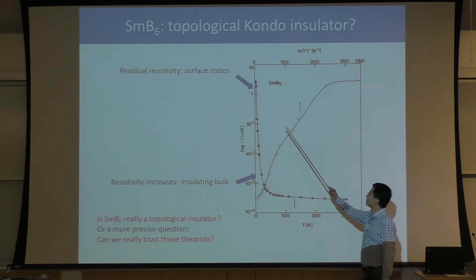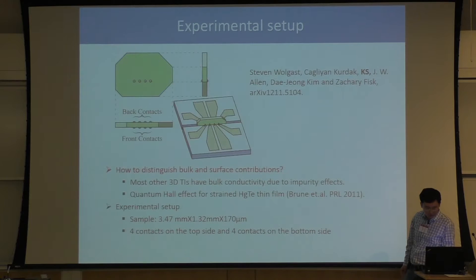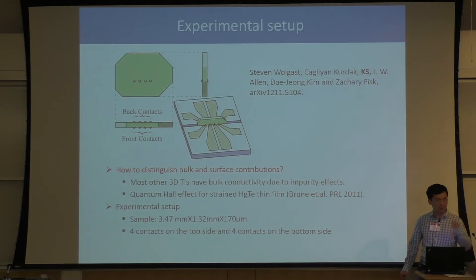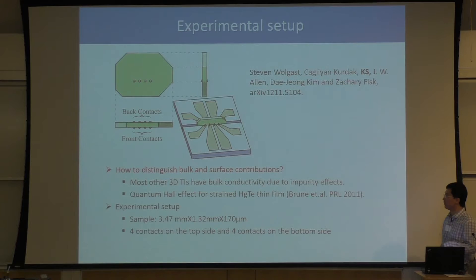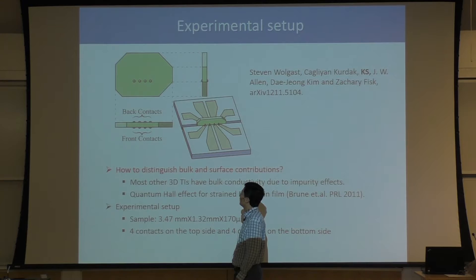The first thing they tested is whether this low temperature conductivity really comes from the surface or from the bulk. That's actually not an easy experiment, because if you measure resistivity or current in your sample, you don't actually determine whether the current is flowing on the surface or in the bulk. To tell the difference, my colleague Cheliang Kordak designed a very smart setup.